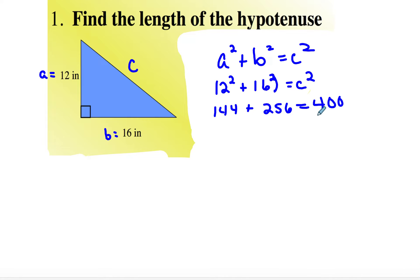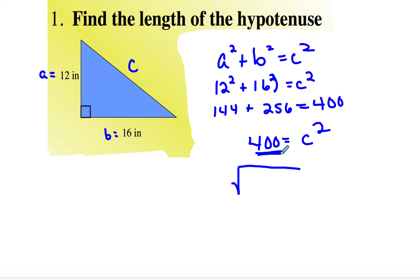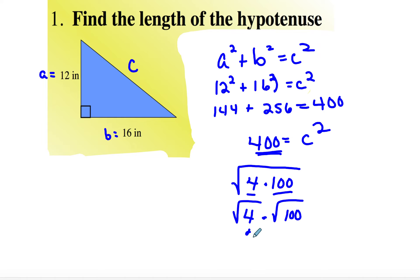So basically what you get is 400 is equal to C squared. You can use your calculator to figure out what the square root of 400 is. What you do is take that 400 and break it down into perfect squares — that would be 4 times 100. The square root of 4 is 2, and the square root of 100 is 10, so 20 is equal to C.